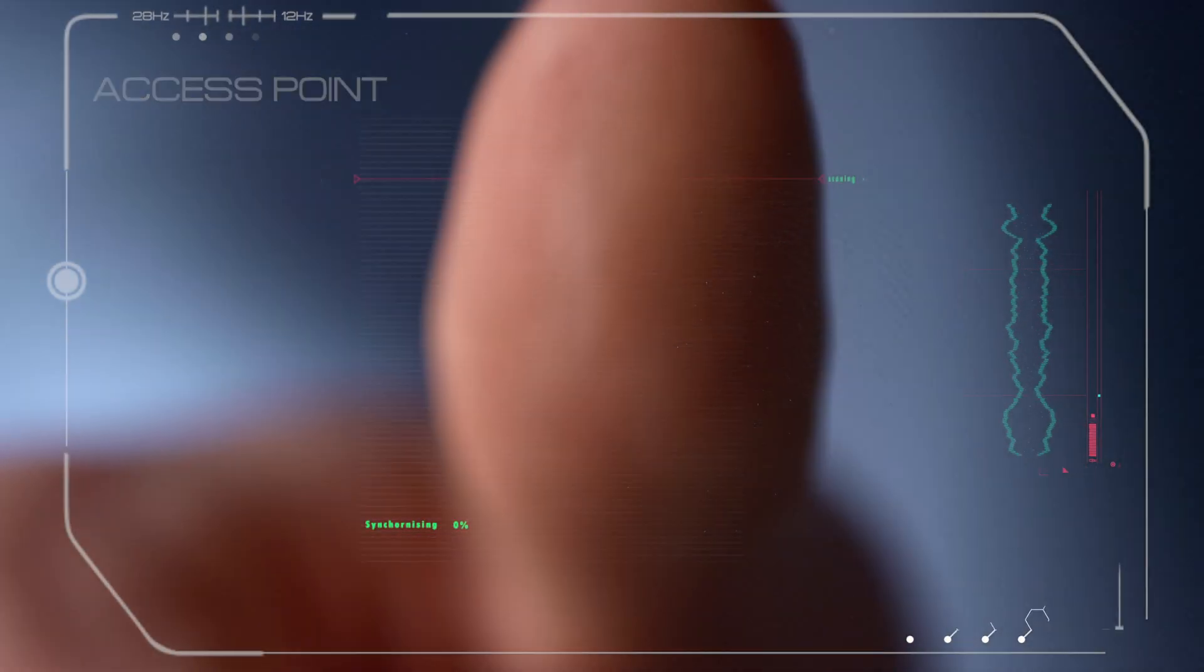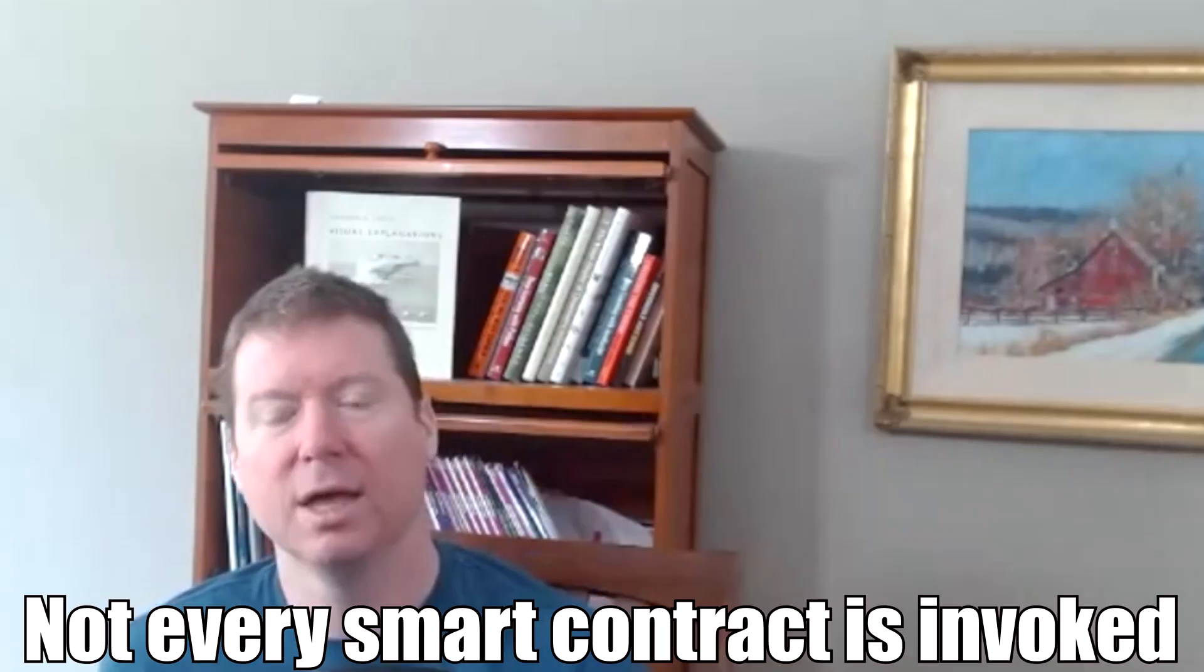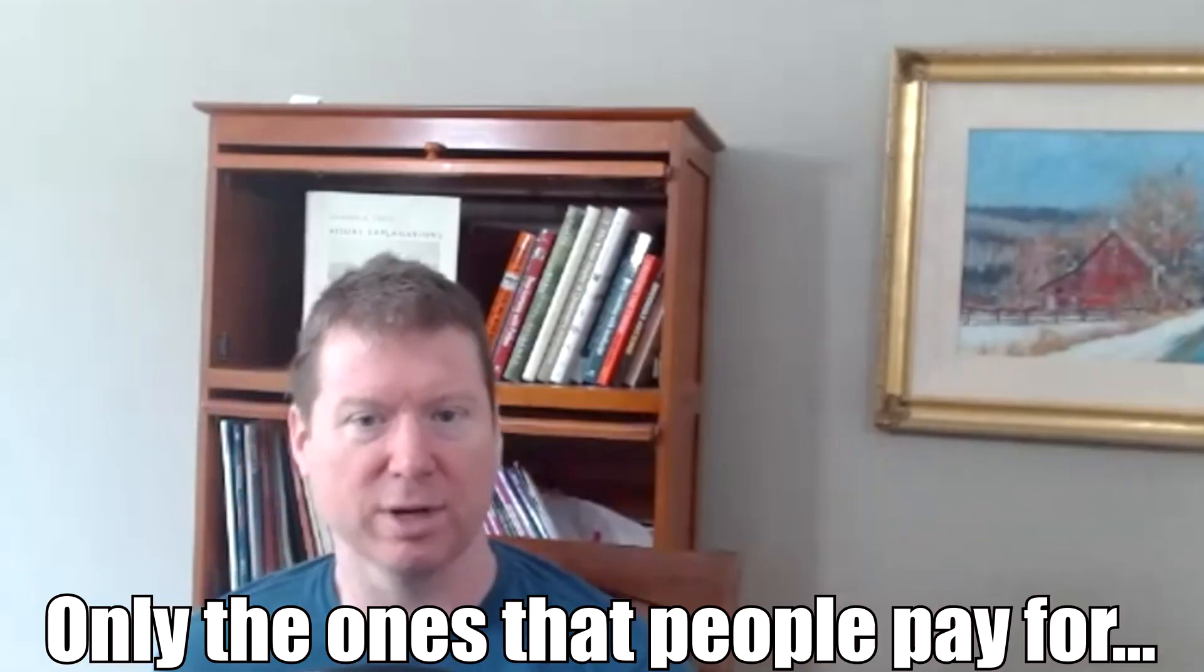Because as most smart contracts are completely passive, right? You need to wait for somebody to come along, they're going to pay the gas fees, they're going to invoke the function on the smart contract. And then that gets invoked really at the point of network validation, say every 30 seconds for Ethereum. But not every smart contract gets invoked, right? Only the ones people pay for. And so you can think of any function in Ethereum basically being an event handler, right? Coming in from the outside.